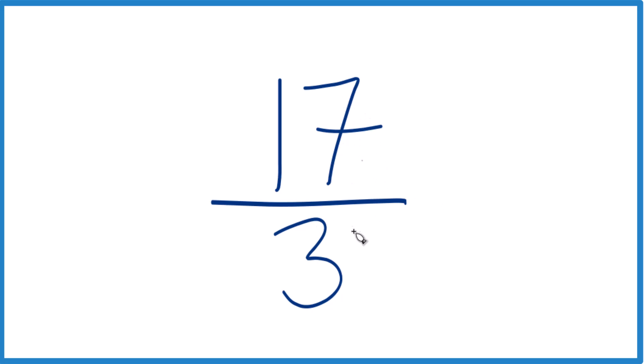So 17 thirds, we're looking for a number, a whole number that goes evenly into 17 and three. And the only whole number that goes into 17 and three is one. So if we divide 17 by one and three by one, we get 17 thirds. So this is already simplified. It's in lowest terms.